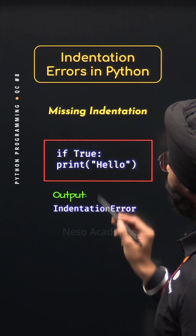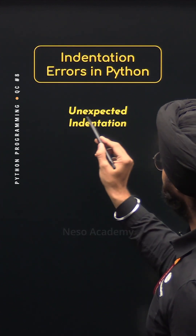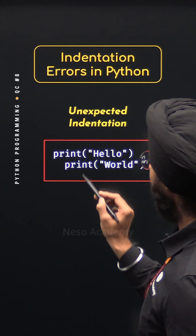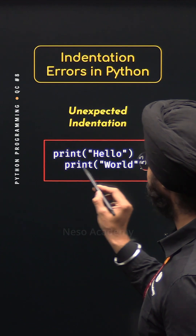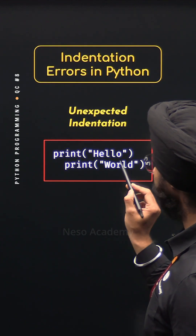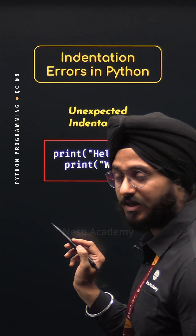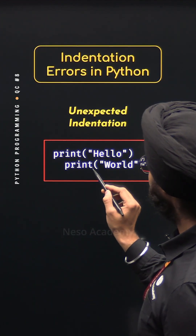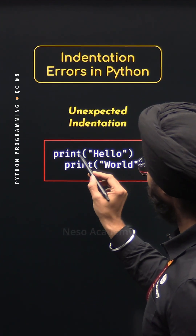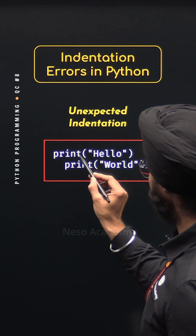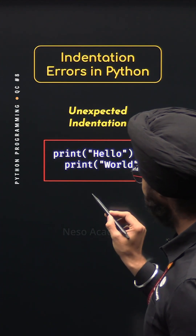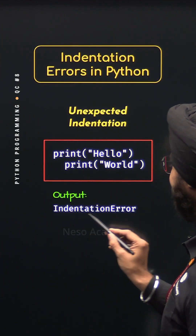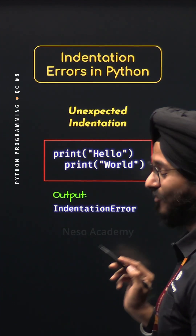Type 2: Unexpected indentation. In this program, I have indented this print function, which is not correct, because this print function is not part of this print function. And hence in this case also, we will get an indentation error.